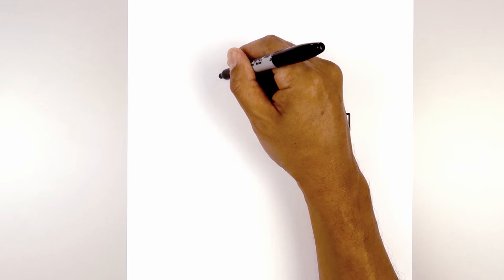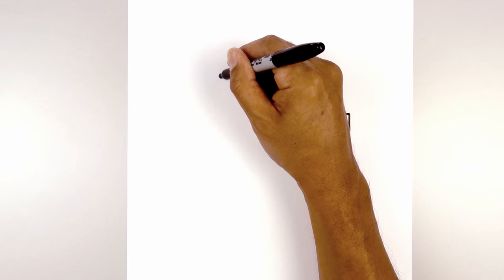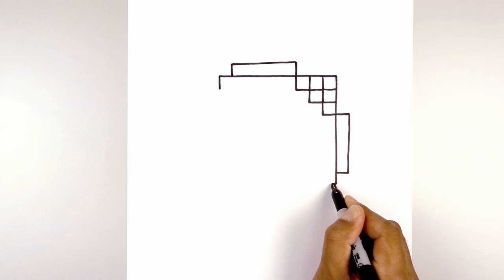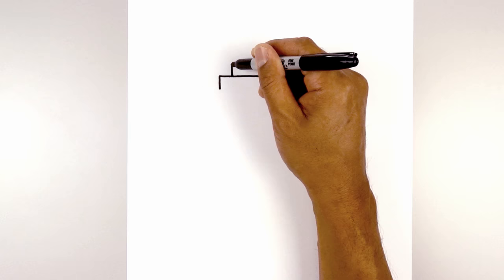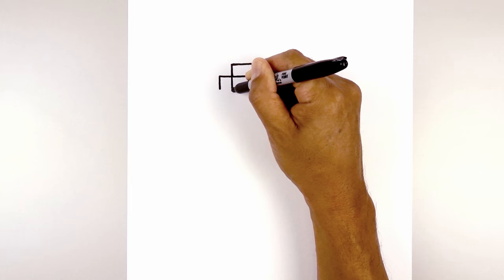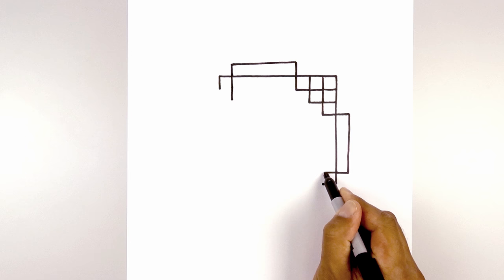Now we're just going to flatten off the ends — start at the top, come down one pixel height. We're going to do the same thing on the bottom, going across one pixel length. Now I want to take this line and extend it down two more pixels — start at the base, come down one and then two. Let's do the same thing at the bottom, going across one and then two.